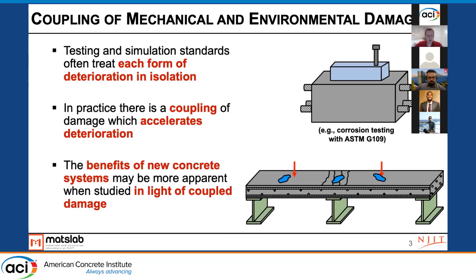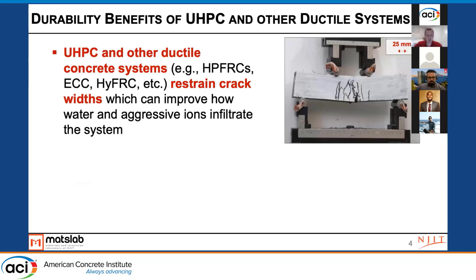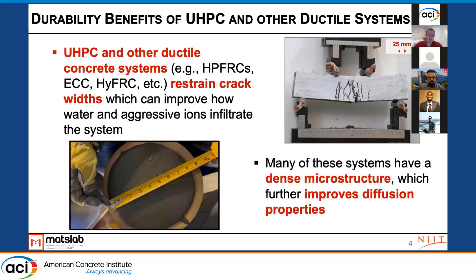The benefit of new concrete materials, especially systems like UHPC, can become more apparent if we look at their behavior in light of these different forms of deterioration. The benefit of UHPC and other ductile concrete materials — high performance fiber reinforced concrete, ECC, hybrid fiber reinforced concrete — is that all these different materials restrain crack widths, which can improve how water and aggressive ions infiltrate into a system. Restraining crack widths can ultimately affect diffusion properties. An additional benefit to many of these materials is that they have a very dense microstructure, which further improves durability-related properties.